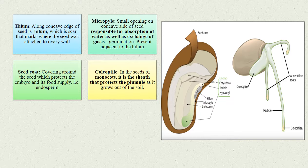Coleoptile: In the seeds of monocots, it is a sheath that protects the plumule as it grows out of the soil.